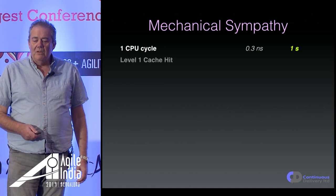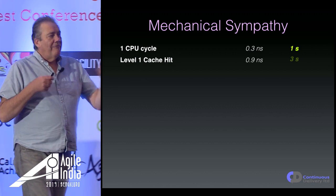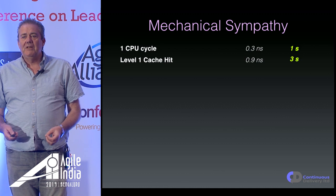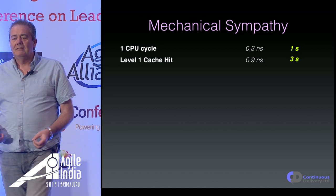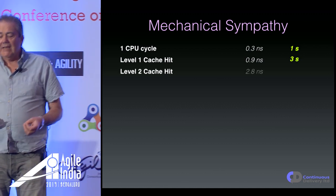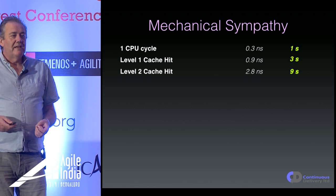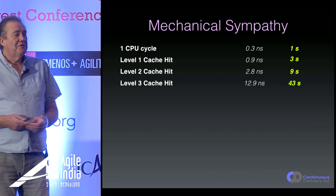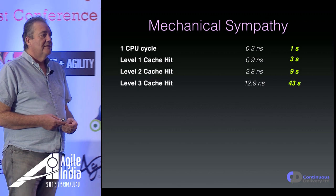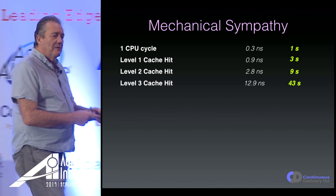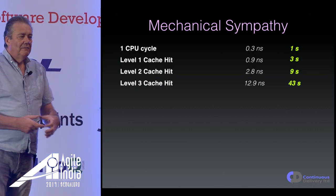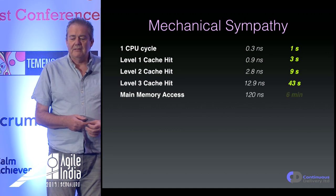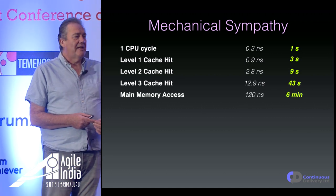If one CPU cycle equalled one second, a level one cache hit would take the equivalent of three seconds. A level two cache hit: nine seconds. A level three cache hit: 43 seconds. We're still on the chip, still in the processor — but this is the difference in performance. Now going to main memory access would take six minutes.